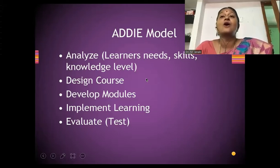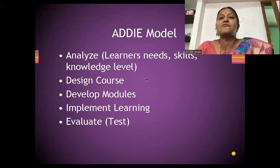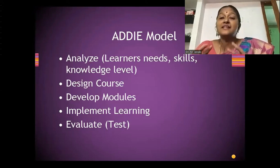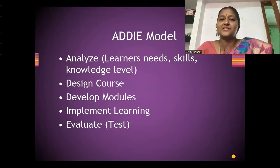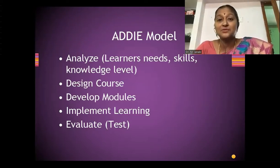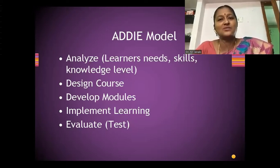One thing we have to keep in mind: all students are not the same. Our current education system has monkeys, elephants, bears, dogs, deer — everyone sitting as a student — and we want everybody to swim like a fish, hop like a frog, jump like a monkey, run like a cheetah. We want everybody to do everything. All have to learn grammar, English, mathematics, science, social — whether they like it or not.